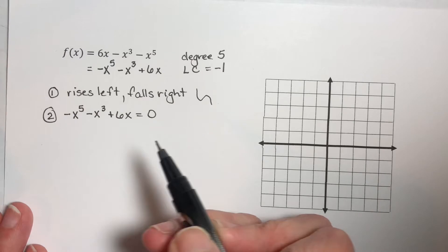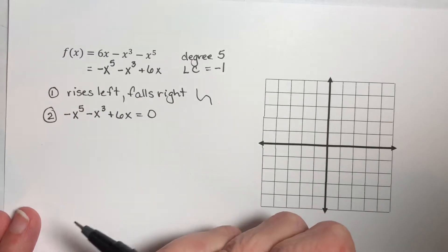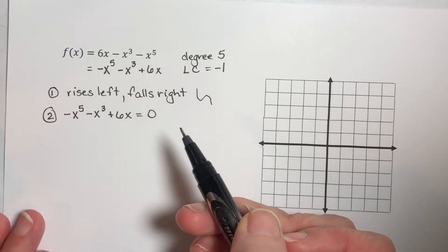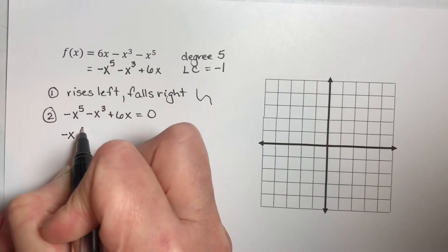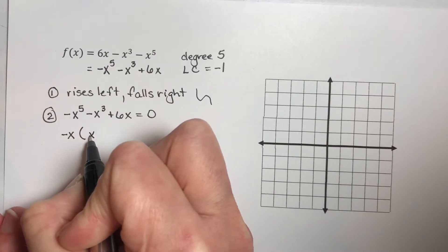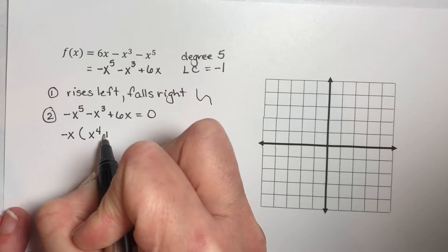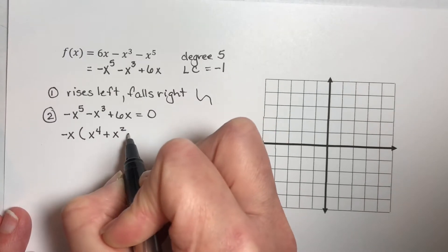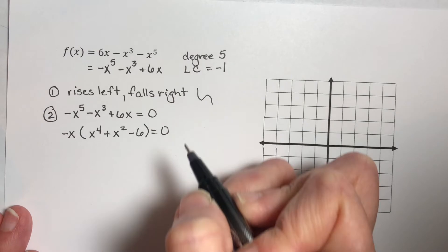So I see that I can factor an x out of this, and it's always easier to factor if your first coefficient is a positive number. So I'm going to factor out a negative x. That gives me x to the fourth plus x squared minus 6 is equal to zero.